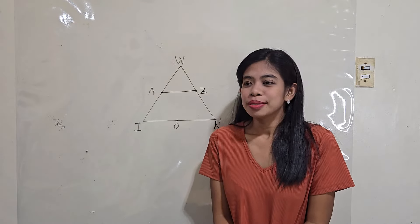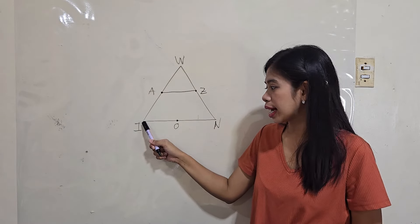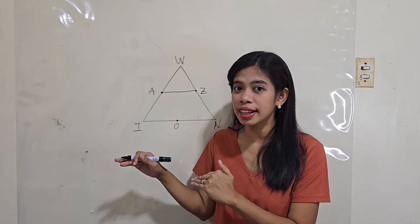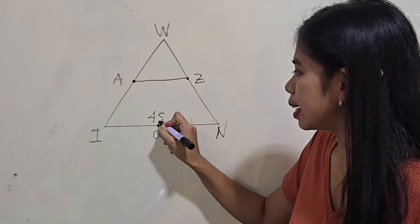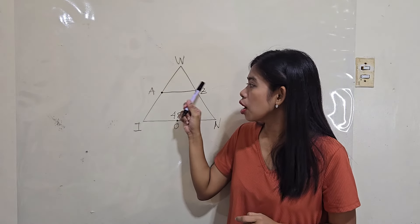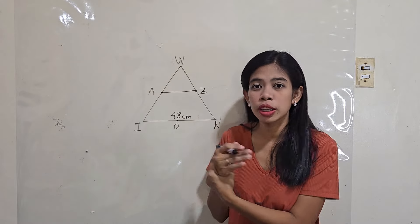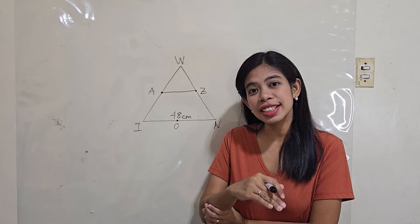So, going back, midline AZ here is parallel to the third side, IN. And if I say that the measure of the third side, IN, is 48 centimeters, we can get the measure of midline AZ by just dividing the third side by two because the midline is half as long as the third side.